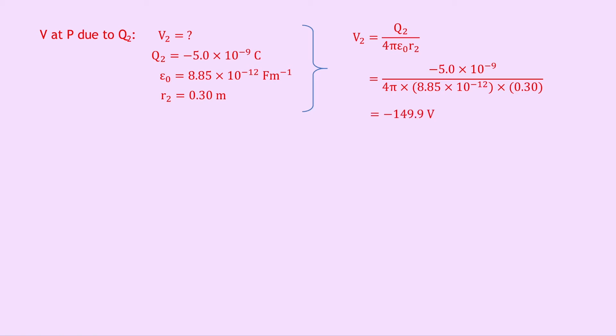Now we need to add our two values for electrical potential together in a scalar sum. So we have V equals V1 plus V2, which gives us 269.8 plus minus 149.9, which is the same as just this minus this, which if you put into your calculator should give you a final answer of 120 volts. And remember, this is a scalar, so there's no direction needed.